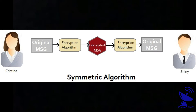To understand the symmetric algorithm, consider the example of Christina and Signee. Christina wants to send a message to Signee. She writes her message, locks it using a padlock, and sends it — the message is now encrypted. On the other side, Signee receives the message and opens it with a key he already has, which is identical to Christina's key. Signee obtained this key beforehand via a physical medium. He can also send a reply using his own padlock.